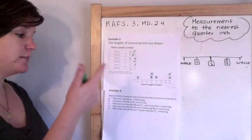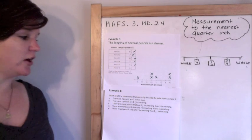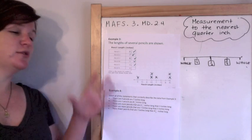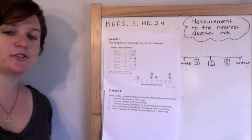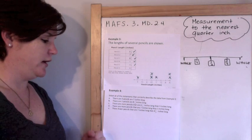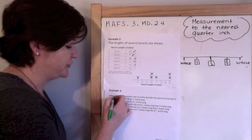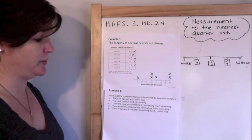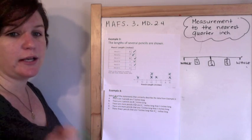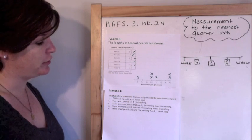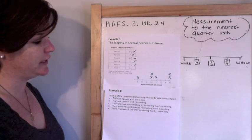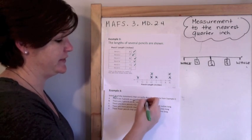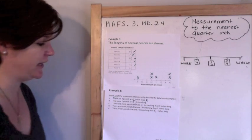It's a graphic response item display grid item, means you are interacting with the illustrations. All right. So for example four, it says select all the statements that correctly describe the data from example three. So I'm using example three to help me answer example four. Set A and selecting all. So this is a multi-select means that there's probably going to be more than one correct answer.